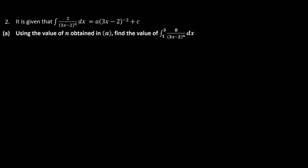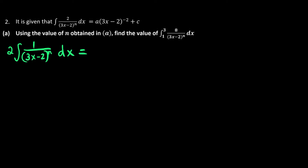Question number 2. They give us the answer for our integration. But remember — if they give us the answer, we don't just trust it; we're going to work it out. We're going to integrate. Since there is a 2 on top, it's a constant — bring it out first. Just like before, we have 1 over (3x minus 2) to the power of n. But this time we're not going to use substitution; we're going to use the direct method. So we bring out 2 and integrate (3x minus 2) to the power of negative n with respect to x.